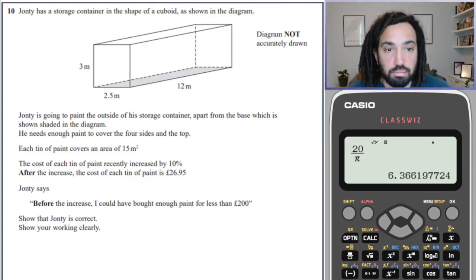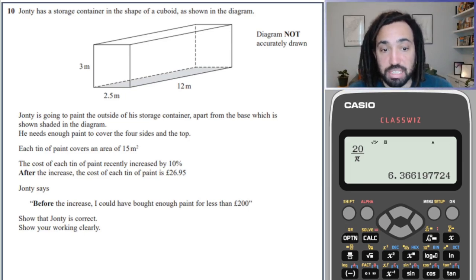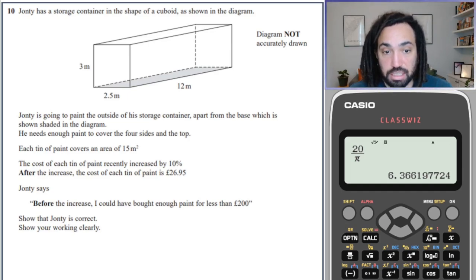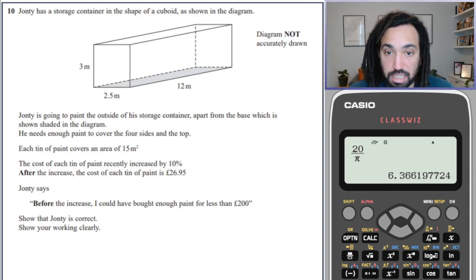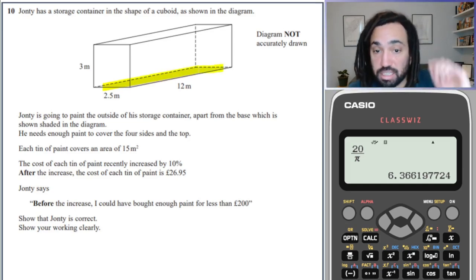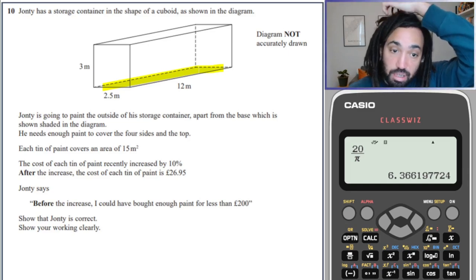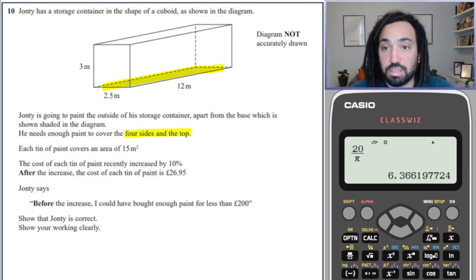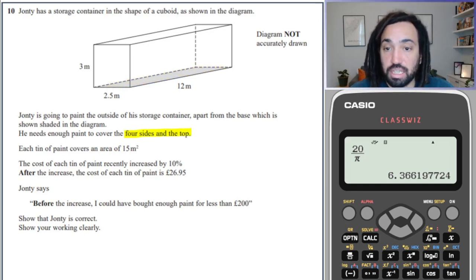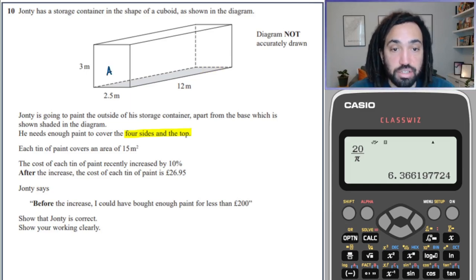Okay, next one. We've got John T. He's got a storage container. I'll let you read all this. And basically, we've got to figure out whether or not he could have afforded the paint before the increase. So the cost of each tin of paint increased by 10%. So let's first off, it's a prism, let's work out the surface area that's needed to cover all sides. So it says that they're going to paint the four sides and the top.